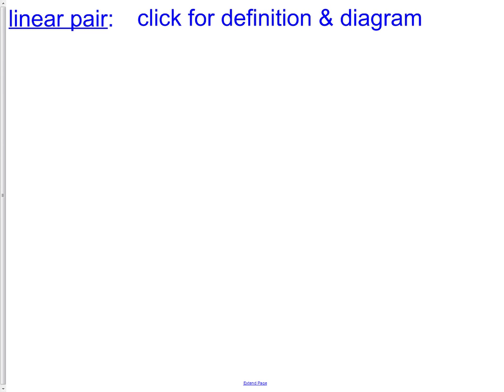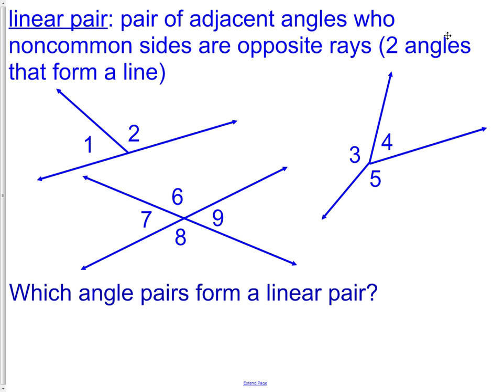Our next definition is a linear pair. So far today we've talked about adjacent angles, vertical angles, and now we have linear pairs. A linear pair of angles is a pair of adjacent angles whose non-common sides are opposite rays. It's kind of a confusing definition, but there's an easier one to remember. When you're looking for a linear pair, look for a line and a ray. So for a linear pair of angles, you want a line and a ray. Can you find it in these pictures?